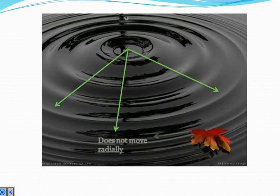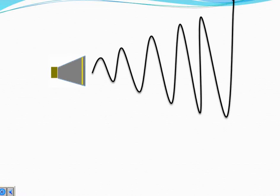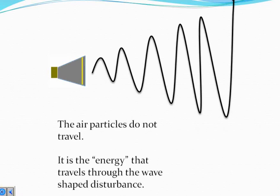If you look at this leaf here, it does not move radially. Had the water moved radially, this leaf would have moved too. But this leaf just bobs up and down because the particles vibrate; they don't move radially. Take a look at this loudspeaker for example. Again, energy is transferred from the loudspeaker to your ear, but the air particles are not transferred. It is the energy that travels in the shape of a wave.